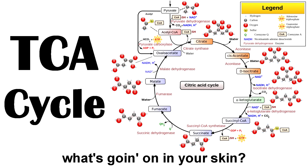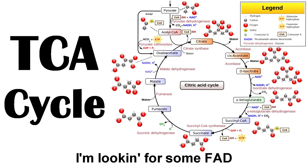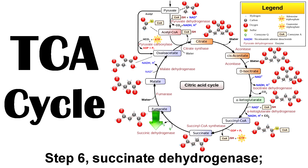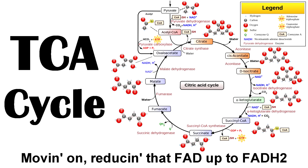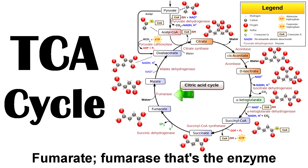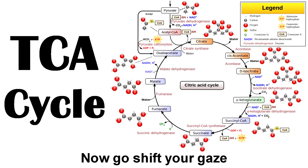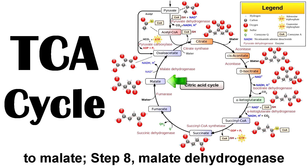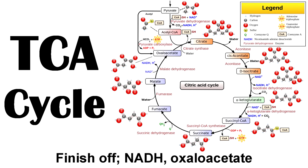What you know about what's going on in your cells? I'm digging, I'm looking for some FAD. Succinate dehydrogenase, that's the key. Moving on, reducing that FAD up to FADH2 — fumarate. Fumarase, that's an enzyme that goes strictly based in malate. Step 8, malate dehydrogenase. Finish off NADH, oxaloacetate.